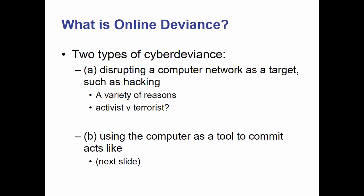There are two types of what is called cyber deviance. There's disrupting a computer network as a target, such as in many hacking cases — such as a denial of service attack, a dox attack. Many hackers do this because they can or because they have a problem with the target. Some of them do it as a form of activism. The term hacktivism has been used by groups like Anonymous. There's kind of a fine line between an activist and a terrorist in this regard.